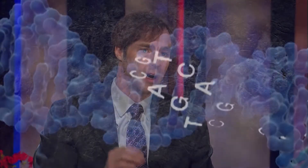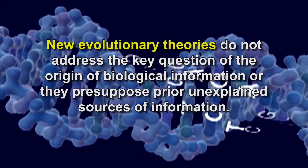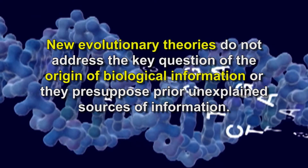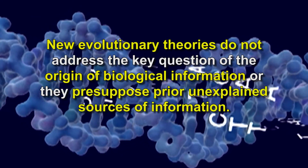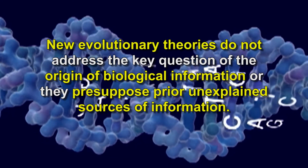I show in these later chapters in the book that yes, there are new models of evolutionary theory, and that in part documents my claim that Neo-Darwinism is dead. The standard textbook theory is no longer accepted by leading evolutionary biologists themselves. They're moving on to try to develop new mechanisms to explain the origin of form and information. But I also show that these new theories invariably either don't address the key question of the origin of biological information, or if they do, they simply presuppose prior unexplained sources of information and therefore leave the question unanswered as well.